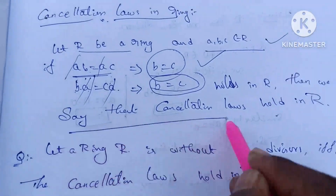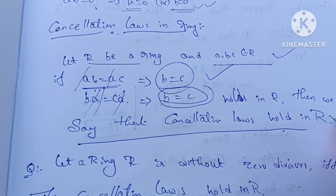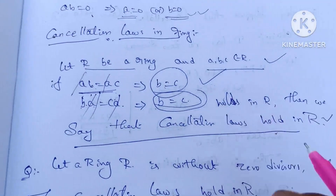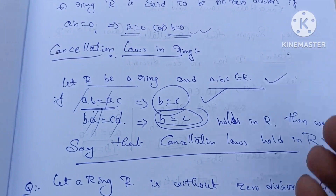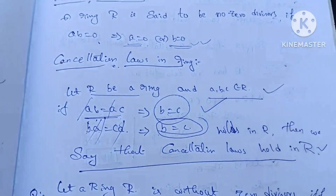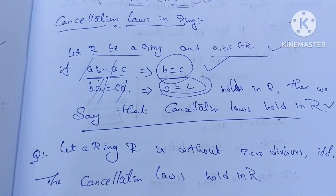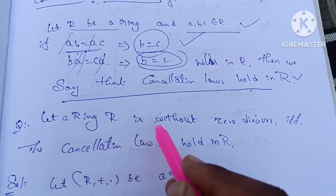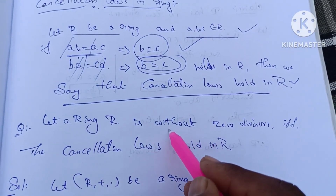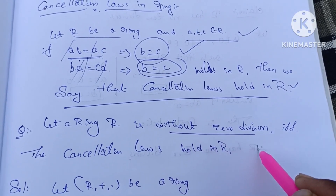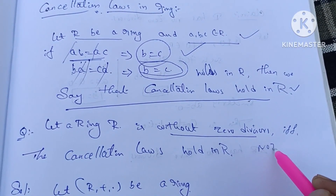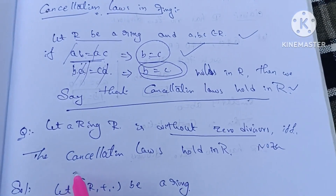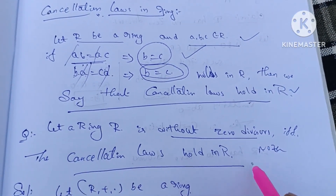We can say that cancellation laws hold in R. So if R has no zero divisors, then the ring R is without zero divisors if and only if the cancellation laws hold in R.